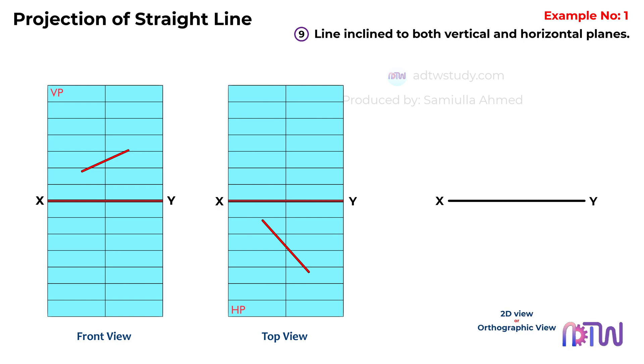Before we dive into the method, there's something important we need to understand. When we're looking at the line in the front view, we represent it as a dash and b dash. In the top view, the same line is shown as a and b.